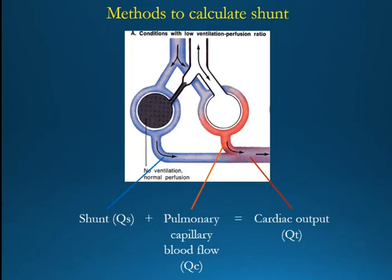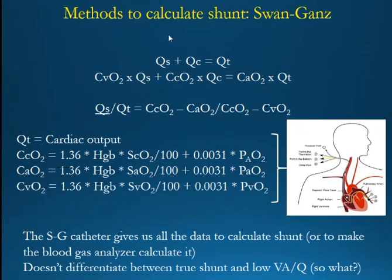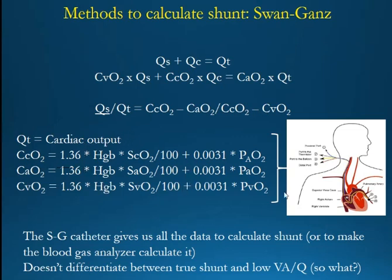Can we calculate shunt at the bedside? One method is based on the fact that mass is conserved and flows are conserved, so the shunt plus the pulmonary capillary blood flow — the one that gets oxygenated — sum up to generate the cardiac output. The content of oxygen in the venous shunted blood plus the content delivered to the oxygenated portion will sum up to create the oxygen content on the arterial side. Mixing this equation, you arrive at shunt over total cardiac output equals the difference between capillary oxygen content minus arterial, divided by capillary minus venous.